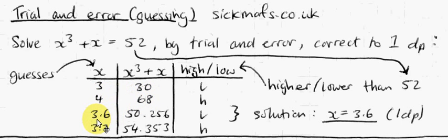So let's say I guess 3.6. Now, ordinarily I probably would have guessed 3.5, which is halfway. But, because I want to get to the answer quickly in this video, I'm just going to go for 3.6.